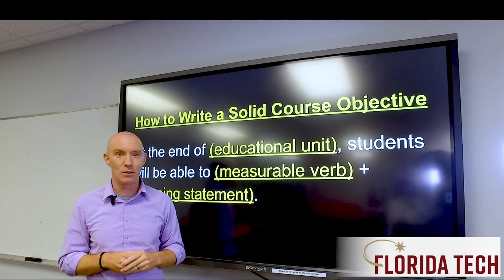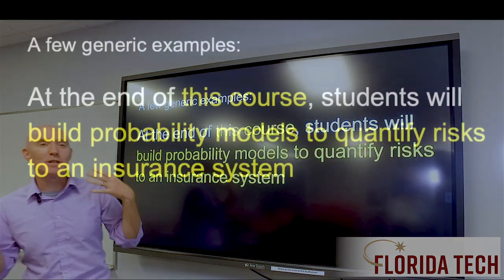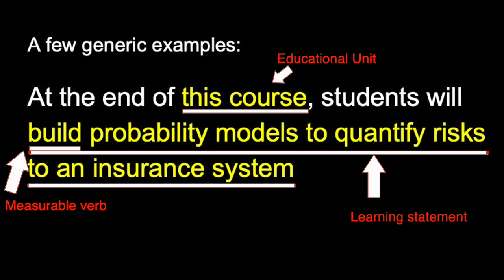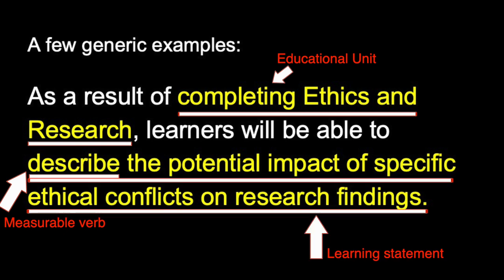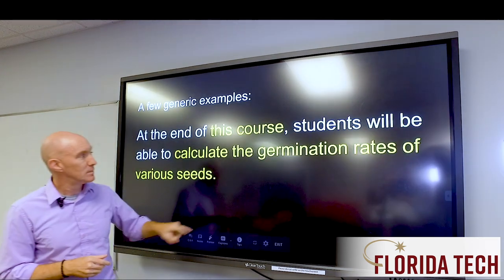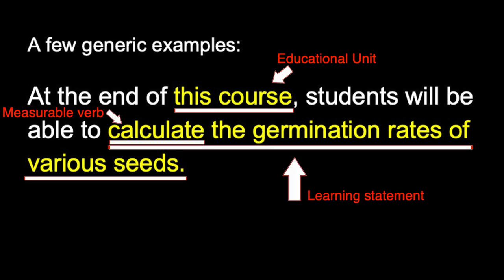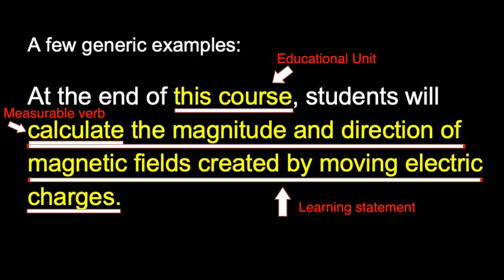The next step is to name the concepts the learners need to learn and how they will demonstrate their understanding. Here are a few generic examples. At the end of this course, students will build probability models to quantify risks to an insurance system. As a result of completing ethics and research, learners will be able to describe the potential impact of specific ethical conflicts on research findings. At the end of this course, students will be able to calculate the germination rate of various seeds. At the end of this course, students will calculate the magnitude and direction of magnetic fields created by moving electric charges.